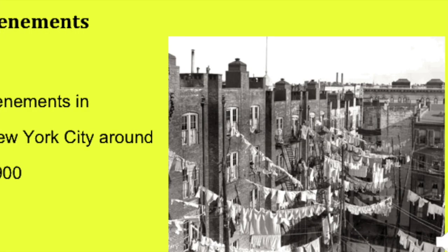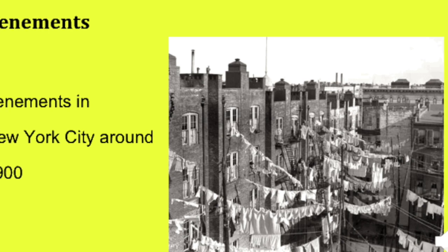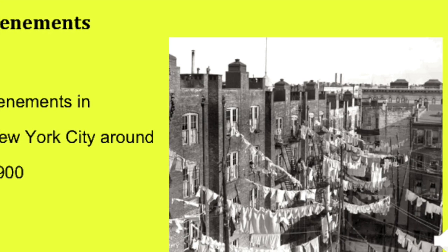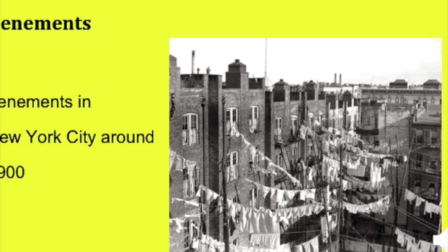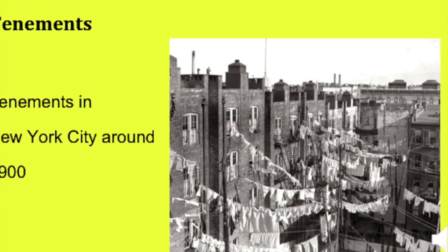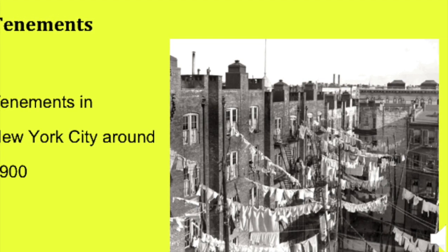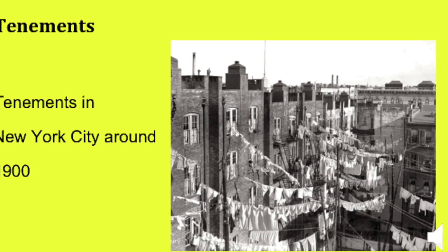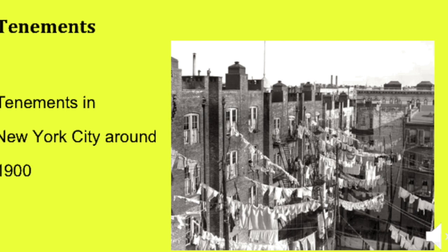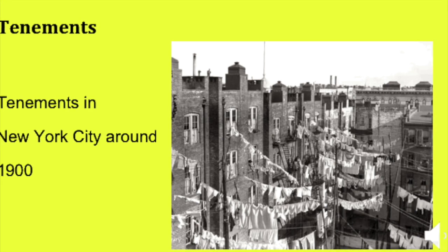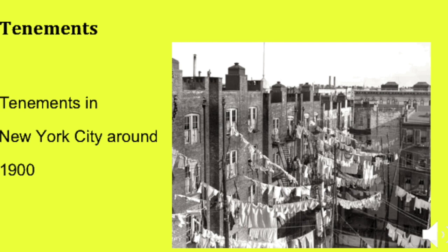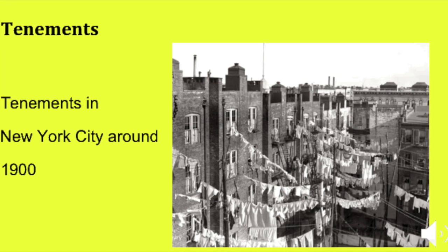So many poor immigrants and migrants from the country settled in tenements, which were small rental units that often consisted of only one room. We've talked about this quite a bit in class recently. Life in the tenements varied from city to city and from building to building, but the conditions were often insanitary and overcrowded. The tenements of New York City were especially infamous for their terrible living conditions.